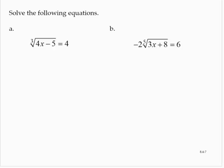Here we have the cube root of 4x minus 5 is equal to 4. We will raise each side of the equation to the third power, yielding 4x minus 5 is equal to 64.